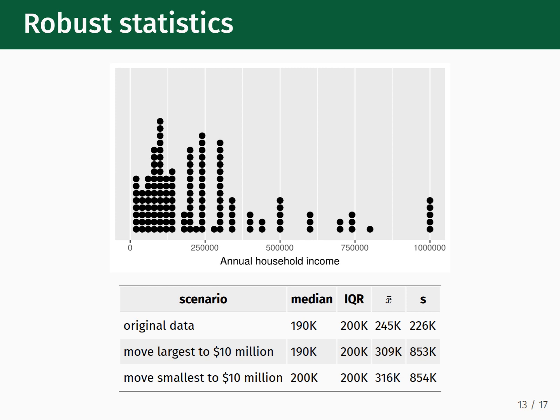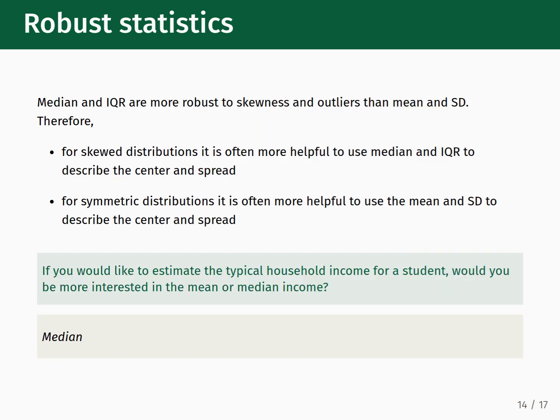If we move the largest data point to a value of $10 million, the median and IQR stay at their values of 190,000 and 200,000 respectively. In contrast, the mean increases to 309,000, and the standard deviation nearly quadruples to 853,000. If instead we move the smallest data point up to $10 million, the median increases slightly to 200,000, but the IQR remains at 200,000. The mean increases even further to 316,000, and the standard deviation increases to 854,000. So, in summary, we've seen that the median and the IQR are more robust to skewness and outliers while the mean and the standard deviation are not.